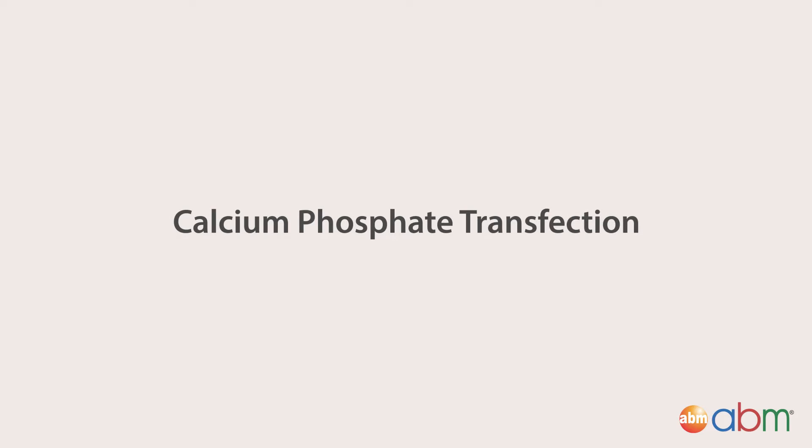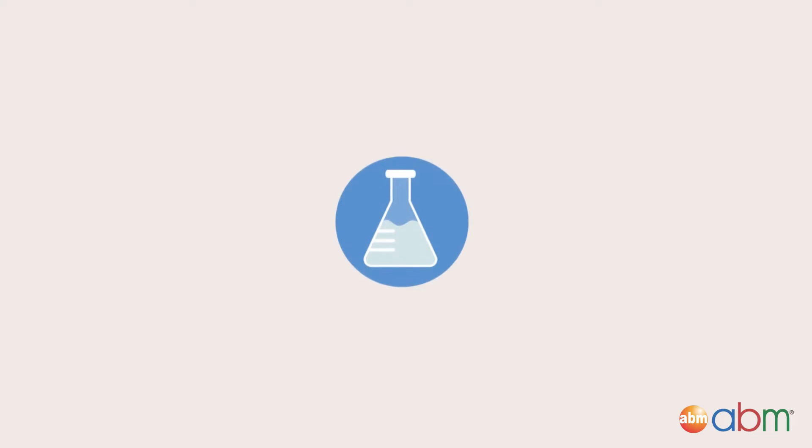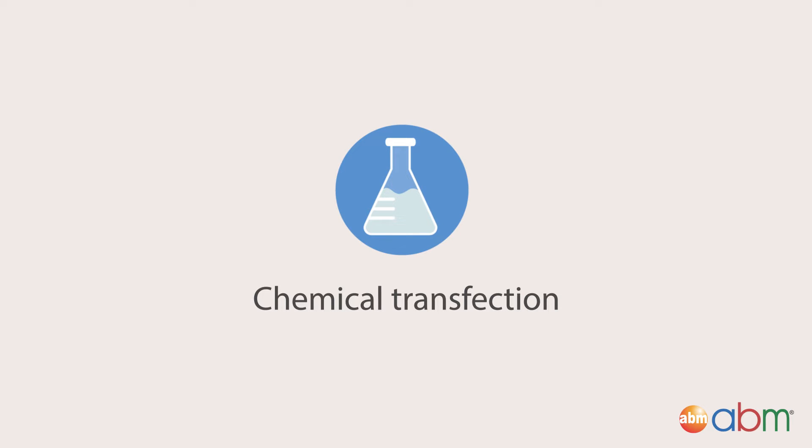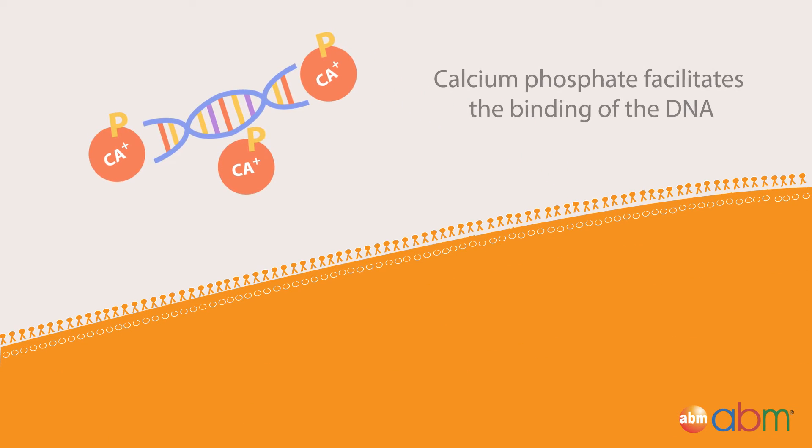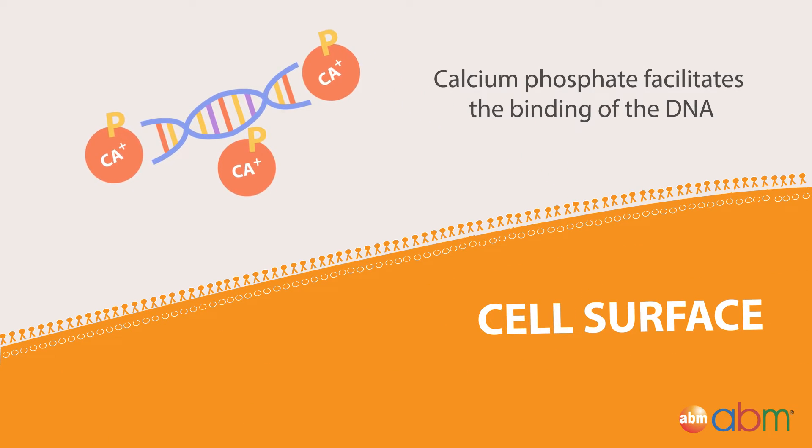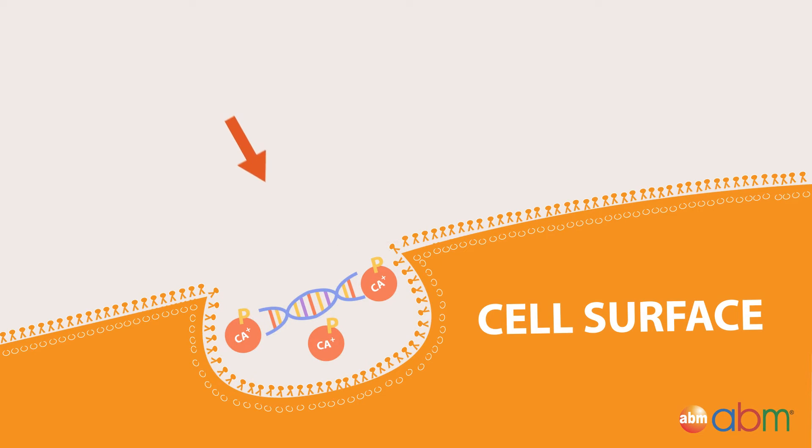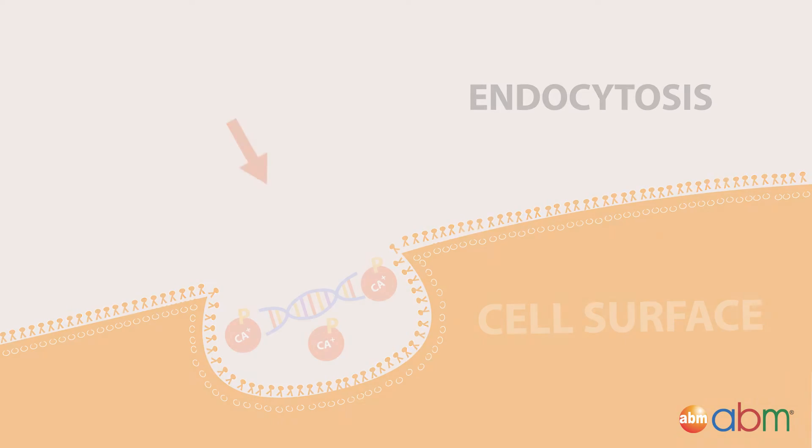Calcium phosphate transfection. The first method is chemical transfection using calcium phosphate. DNA-calcium phosphate precipitates are formed, neutralizing the DNA charge. Calcium phosphate facilitates the binding of DNA to the cell surface, promoting entry to the cell by endocytosis.